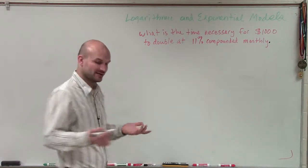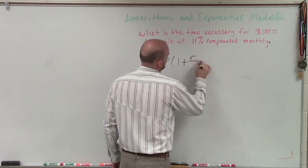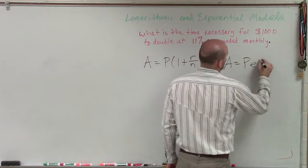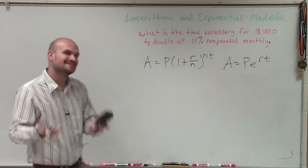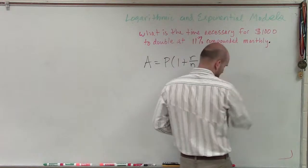So when we start talking about compound interest, we know we have two different formulas: A equals P times 1 plus r over n raised to the n times t, and A equals Pe to the rt. Now remember, the second equation was when we were talking about continuous interest. And since we know we're going to be compounded monthly, we're not going to be using this equation.